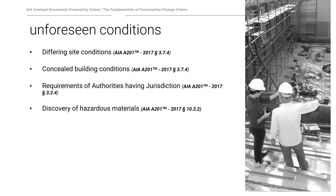Requirements of the authority having jurisdiction can also trigger change orders — changes at a permit review, retroactive changes in the law, or ordinances that impact the project. Code officials can interpret things differently, and those are legitimate change order requests if we had no prior knowledge of those changes. Discovery of hazardous materials — asbestos, lead paint, mold — is another common cause, covered in AIA A201 paragraph 10.3.2.